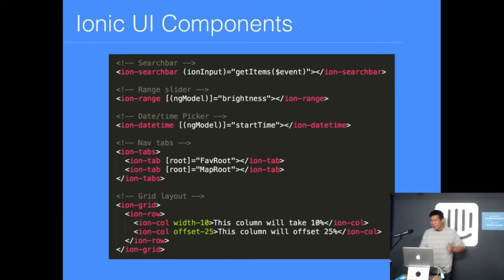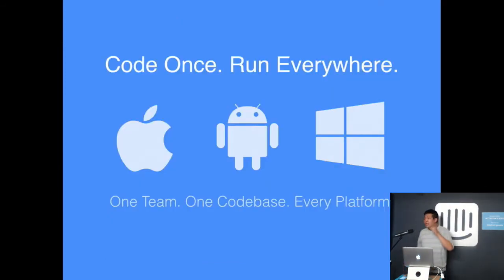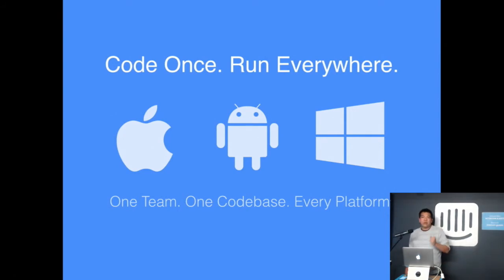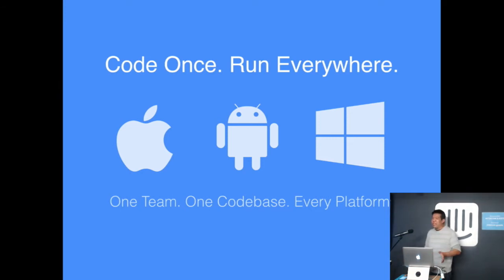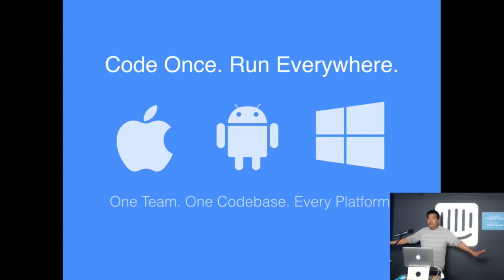This all means it's easier than ever to fulfill the original promise of hybrid app development — code once, run everywhere. You have a single team, a single code base, and you can run across every platform. Ionic is completely built on web and browser standards, so it's also great for the mobile web as well as some of the things coming next.